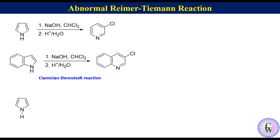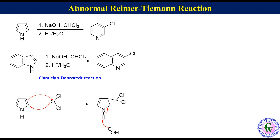Pyrrole and dichlorocarbene undergo an insertion reaction to produce a fused bicyclic intermediate. Hydroxide ion then abstracts the NH proton, which is followed by electronic delocalization leading to formation of a C-N pi bond, breaking of the C-C sigma bond of the fused ring, formation of a C-C pi bond, and elimination of chloride ion to produce 3-chloropyridine.